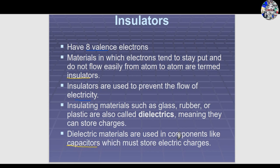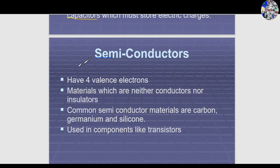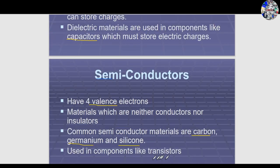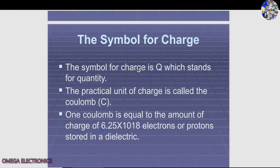Capacitors store electric charge. Semiconductors are materials or atoms having four valence electrons in the outer shell. These materials are neither conductors nor insulators, placing them in the semiconductor category. Common examples are carbon, germanium, and silicon, which have four valence electrons and are broadly used in components like transistors.